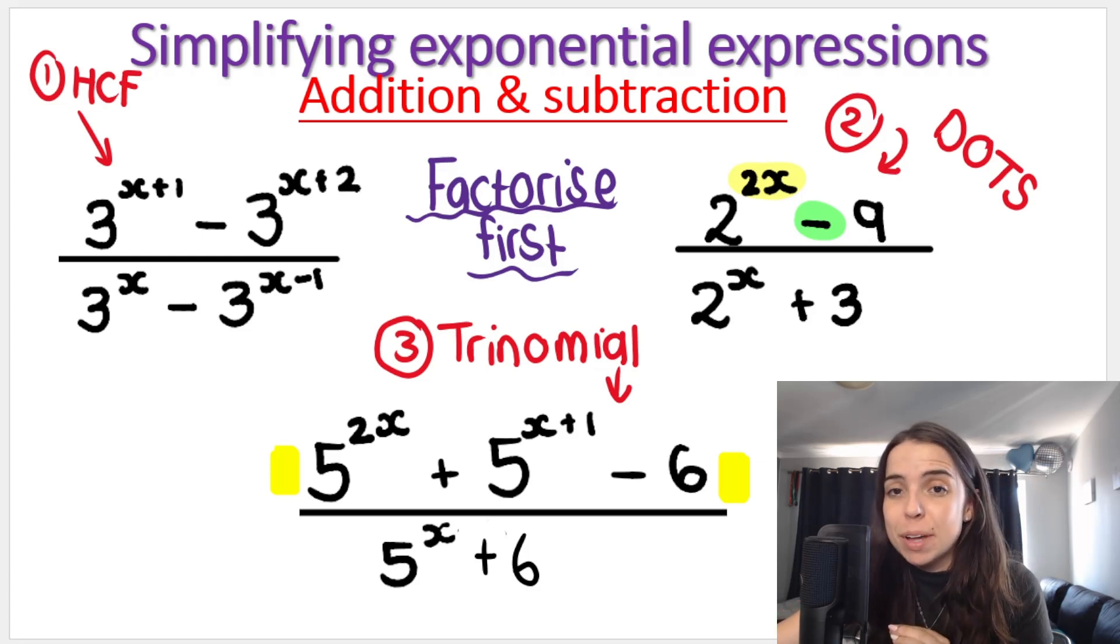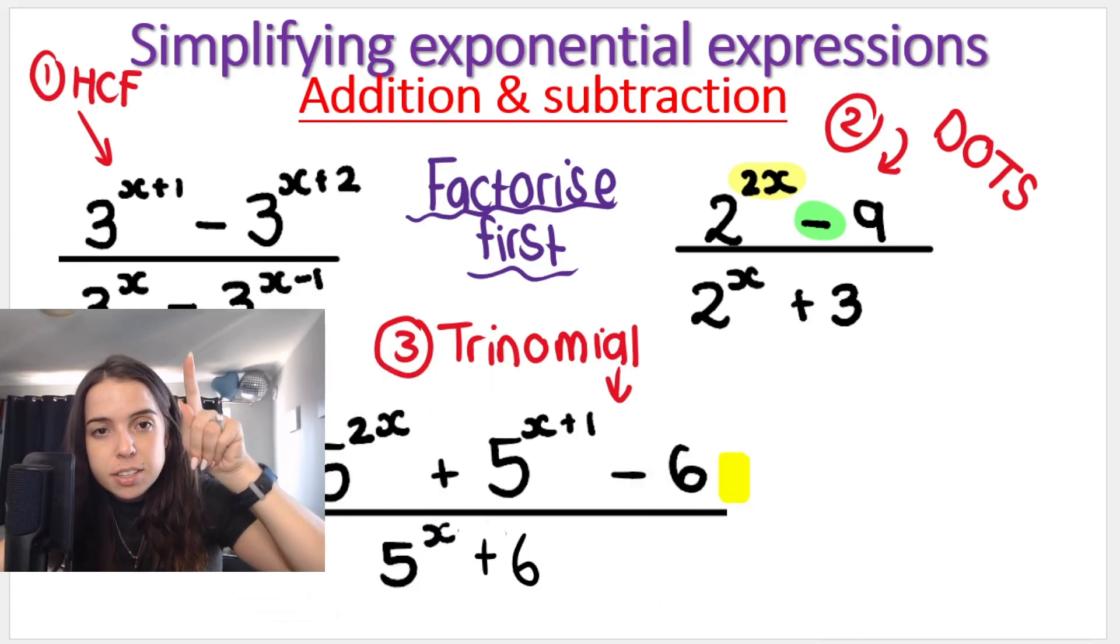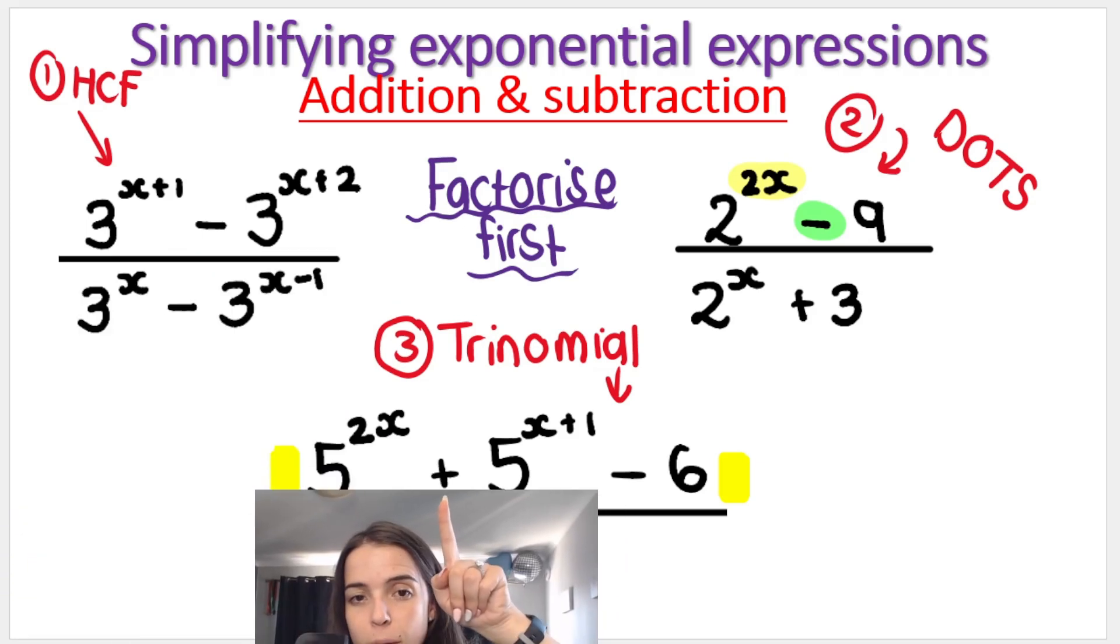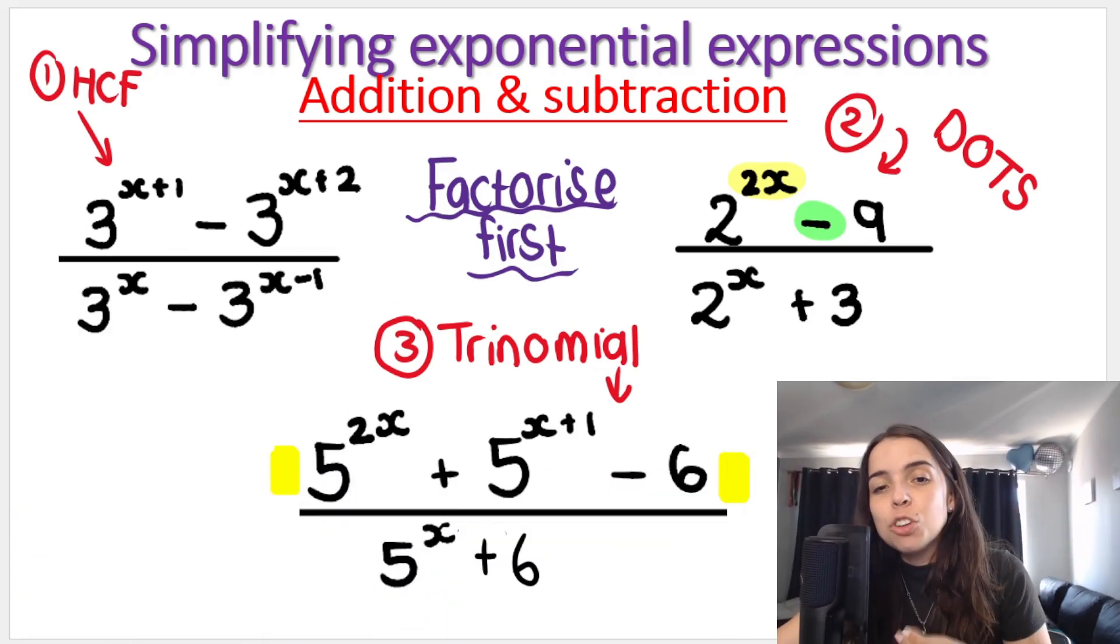Now, first of all, remember, as soon as you see pluses and minuses separating the term, so multiple terms, more than one term separated by plus or minus, like you see over here, you cannot go and simply cancel. You cannot go and simply divide. We have to factorize first. We have to get one term at the top and one term or whatever at the bottom, and then we can see if we can cancel.